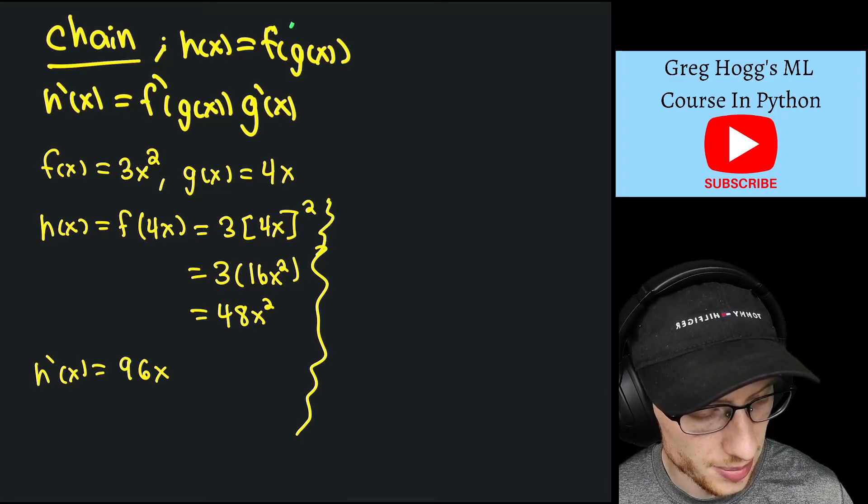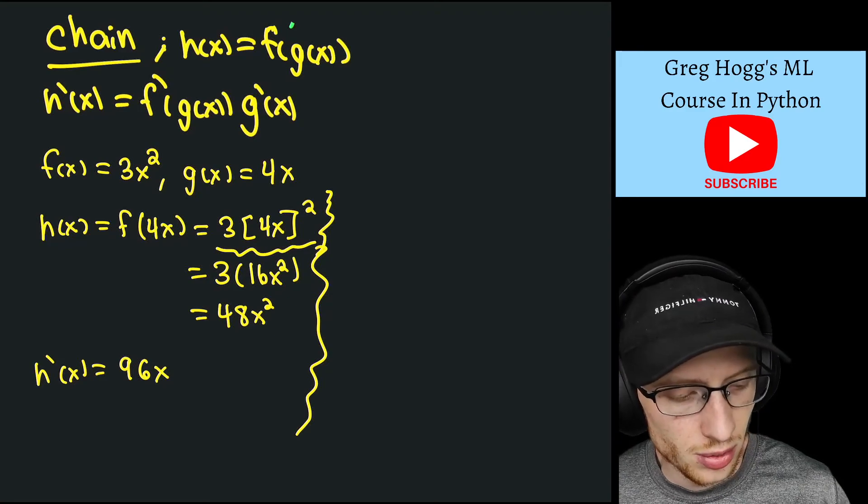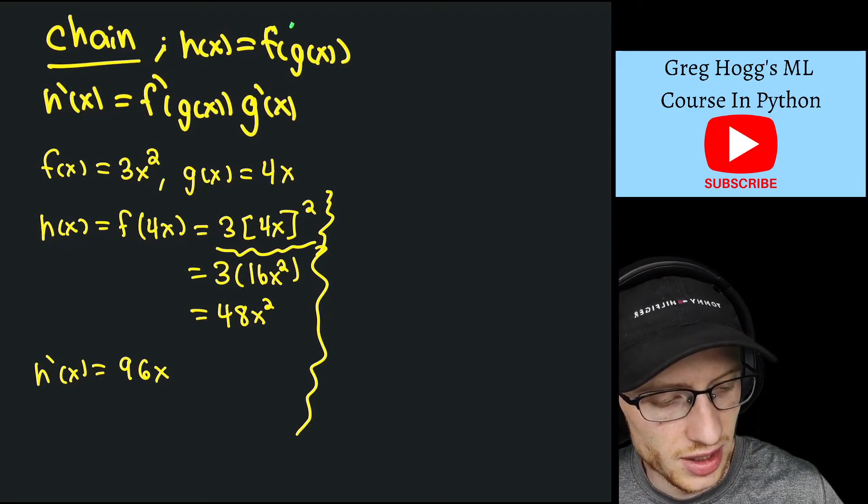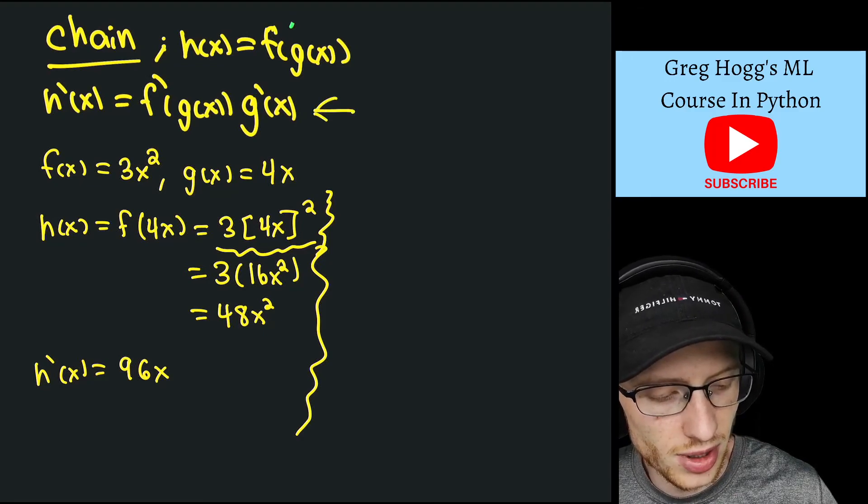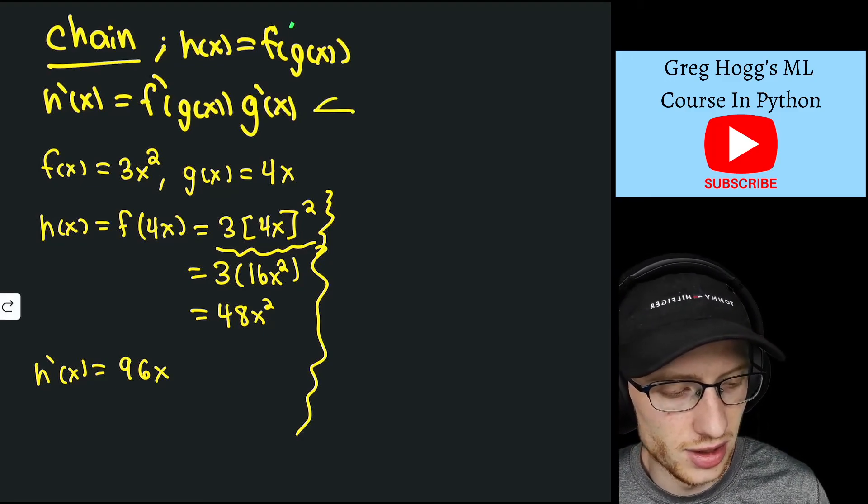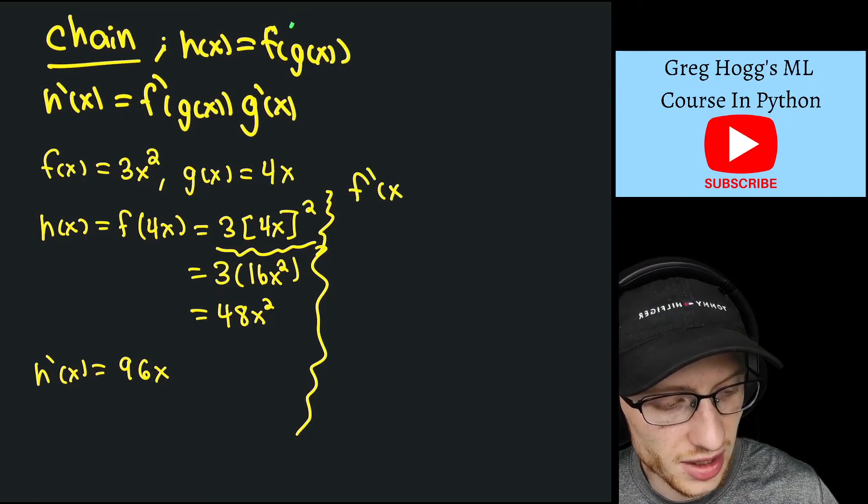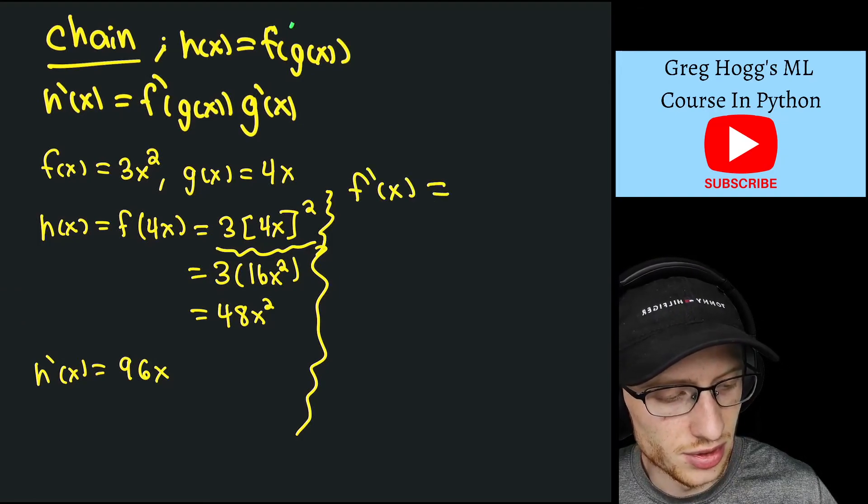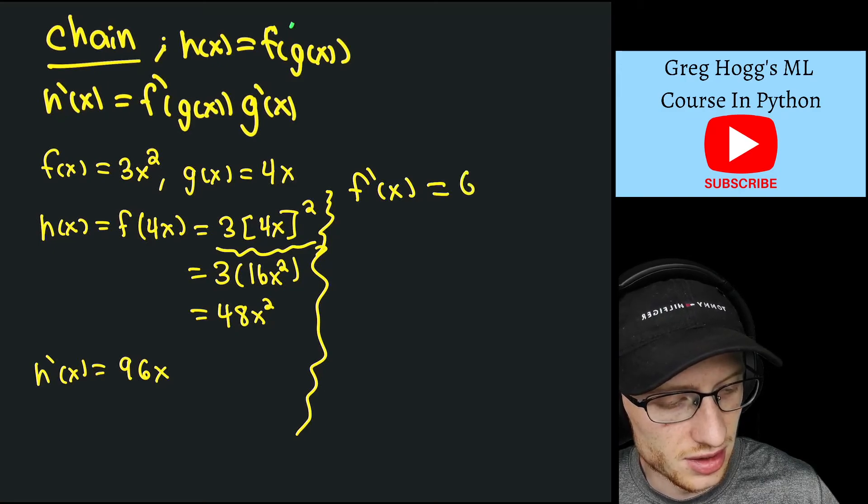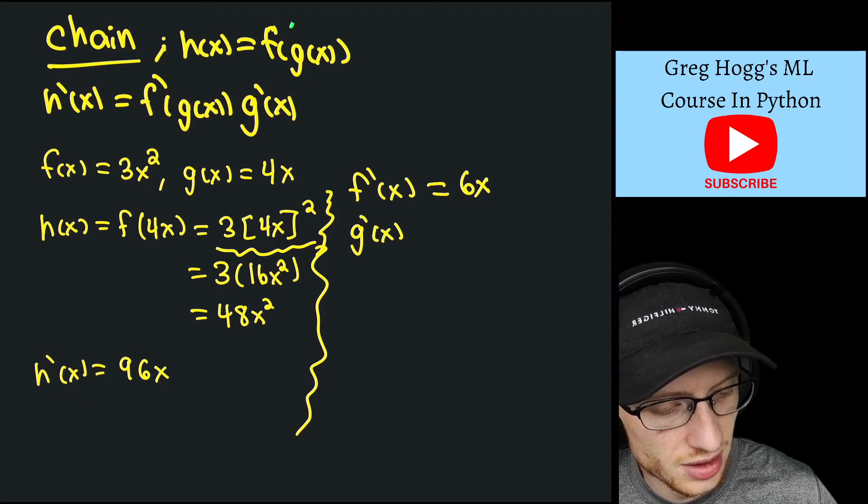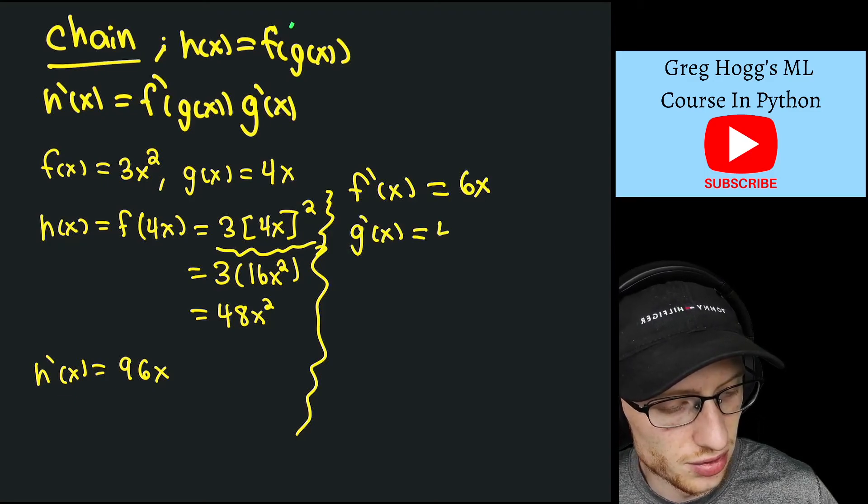So right here, we have h(x) is equal to this thing, well, we're saying that h'(x) is f'(g(x)) times g'(x), clearly we need f', so f'(x) itself is equal to 6x, g'(x) is equal to just 4.